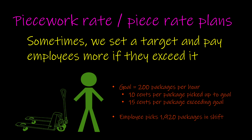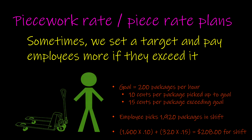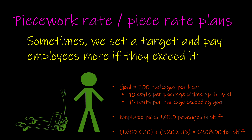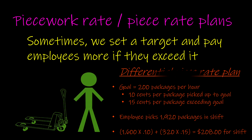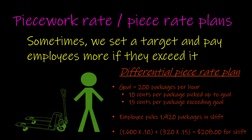Our employee goes and picks the same 1,920 packages as in the previous example, only this time we calculate their pay a little bit differently. It's 1,600 times 10 cents plus 320 times 15 cents — 320 being the number of packages that they exceeded their goal by — and that gives them $208 for the entire shift. So we've given our employees a little bit of an incentive to exceed their goal, and because of that incentive, they've helped us avoid having to hire an additional person. When we put these types of piece rate plans together, they're called differential piece rate plans because we have one level that we pay up to a certain point, and then when employees exceed that point, we pay another level.